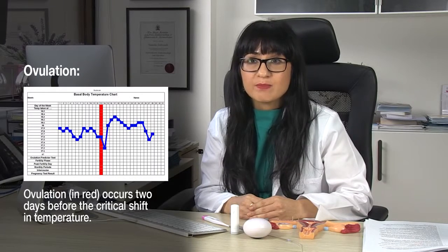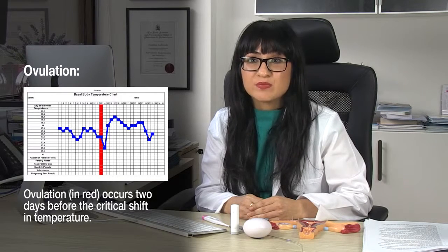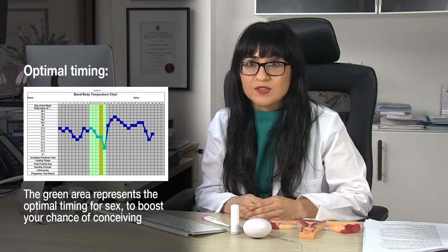Measuring your basal body temperature is really important because you'll be able to see a shift in your body temperature. Over time you'll see a pattern. You'll be able to see when you've ovulated because ovulation occurs two days before that rise, and that's great moving forwards — it'll help you predict when to have sex to maximise your chances of pregnancy.